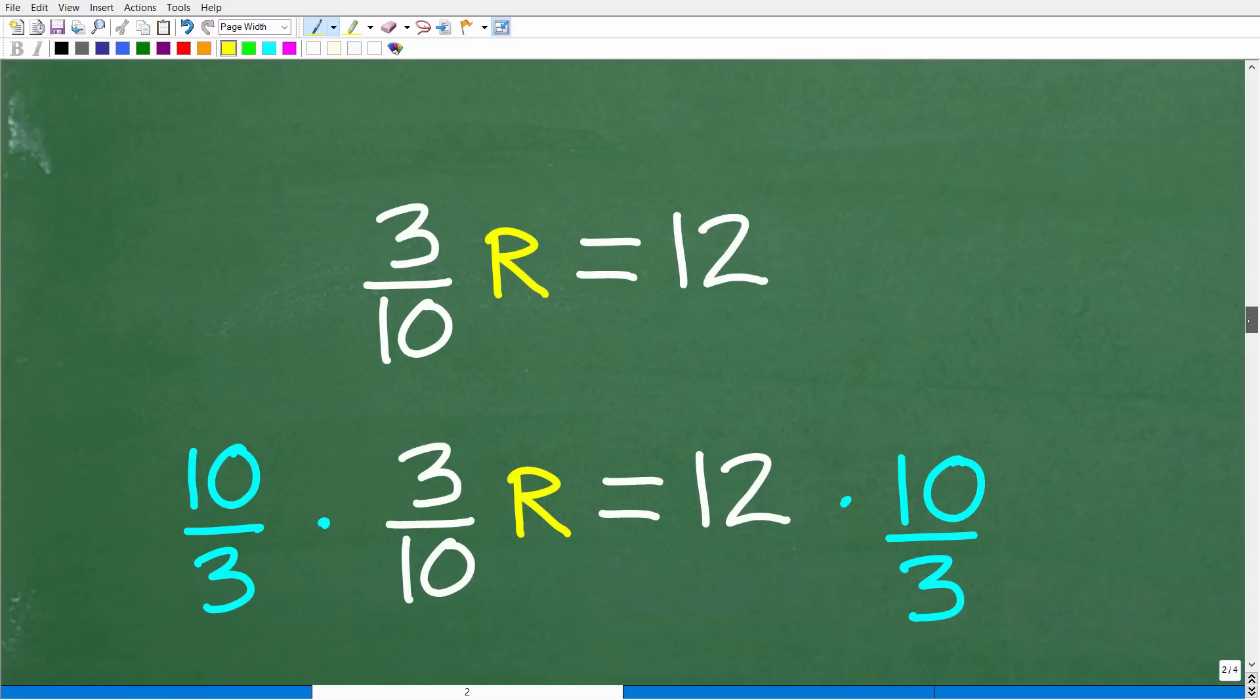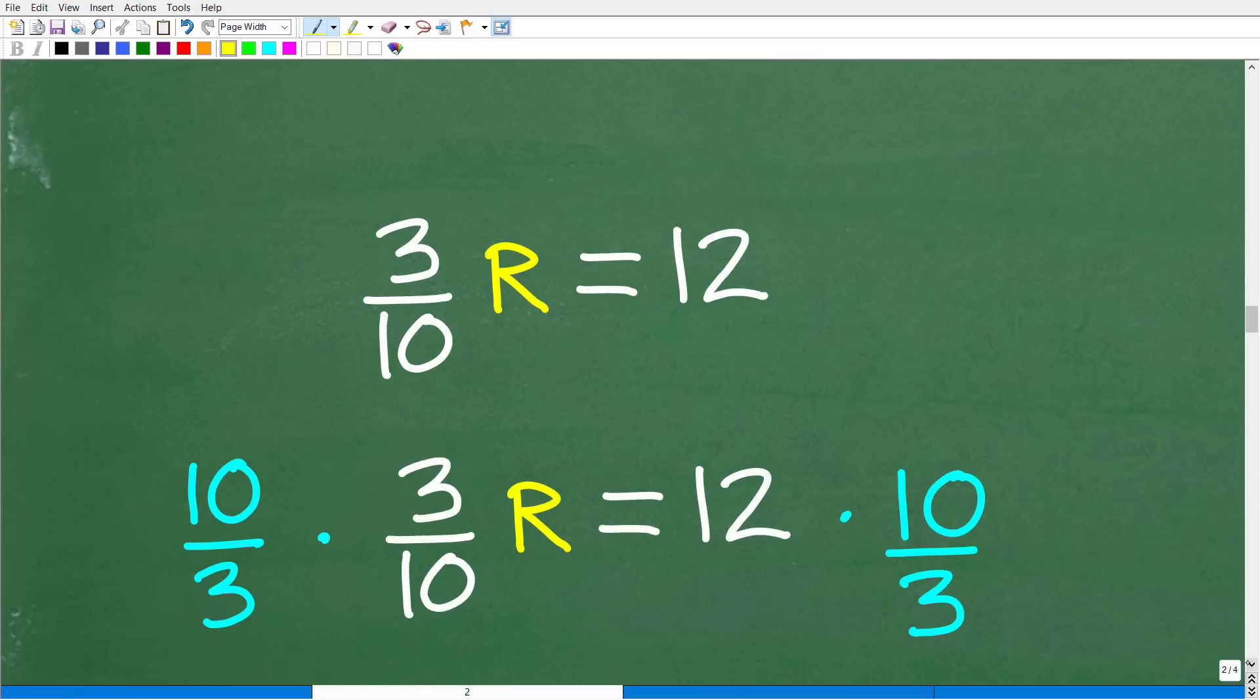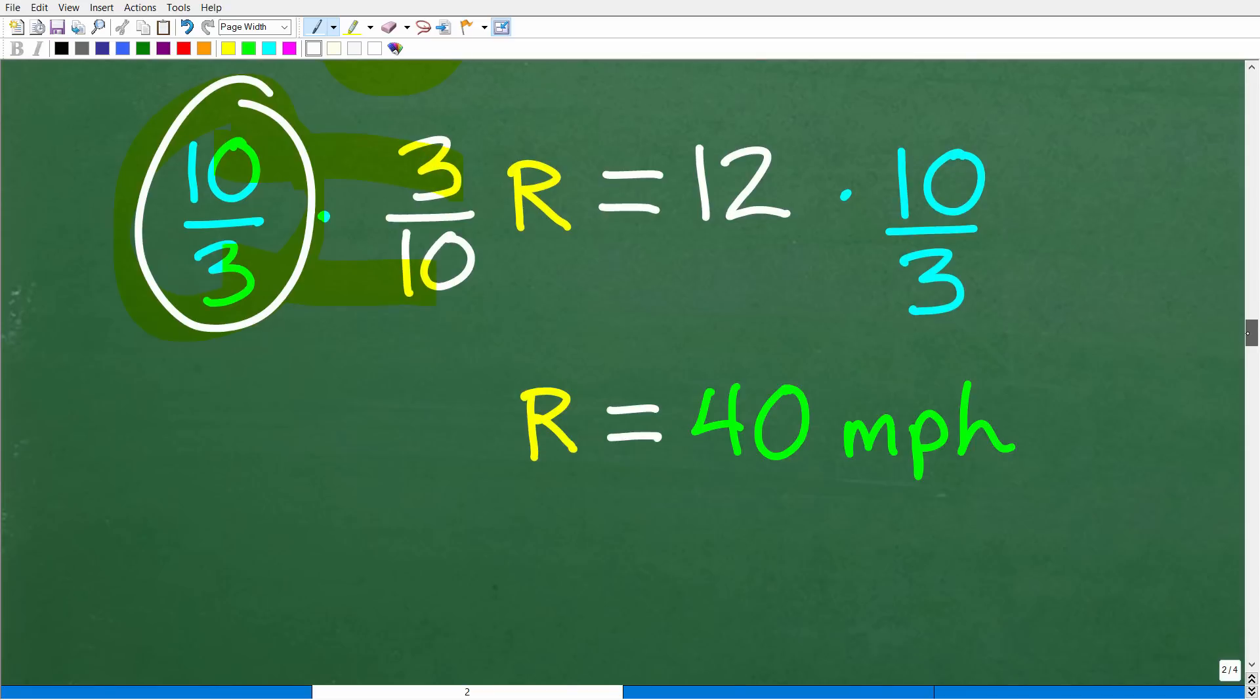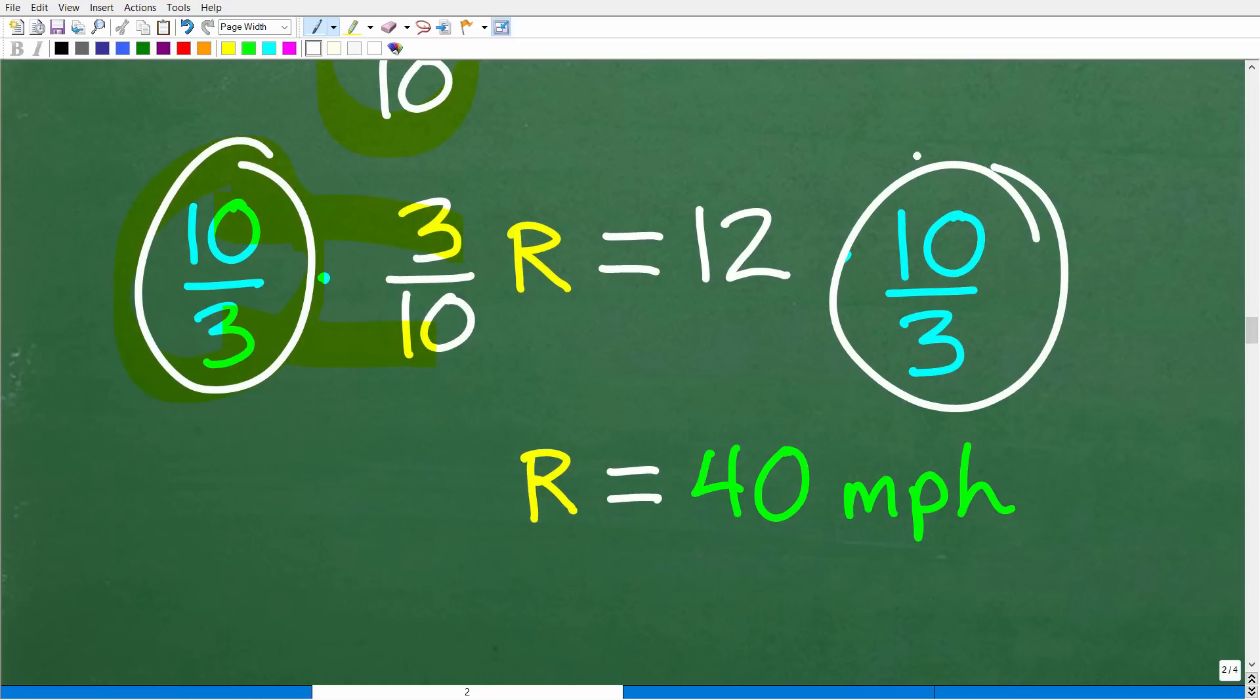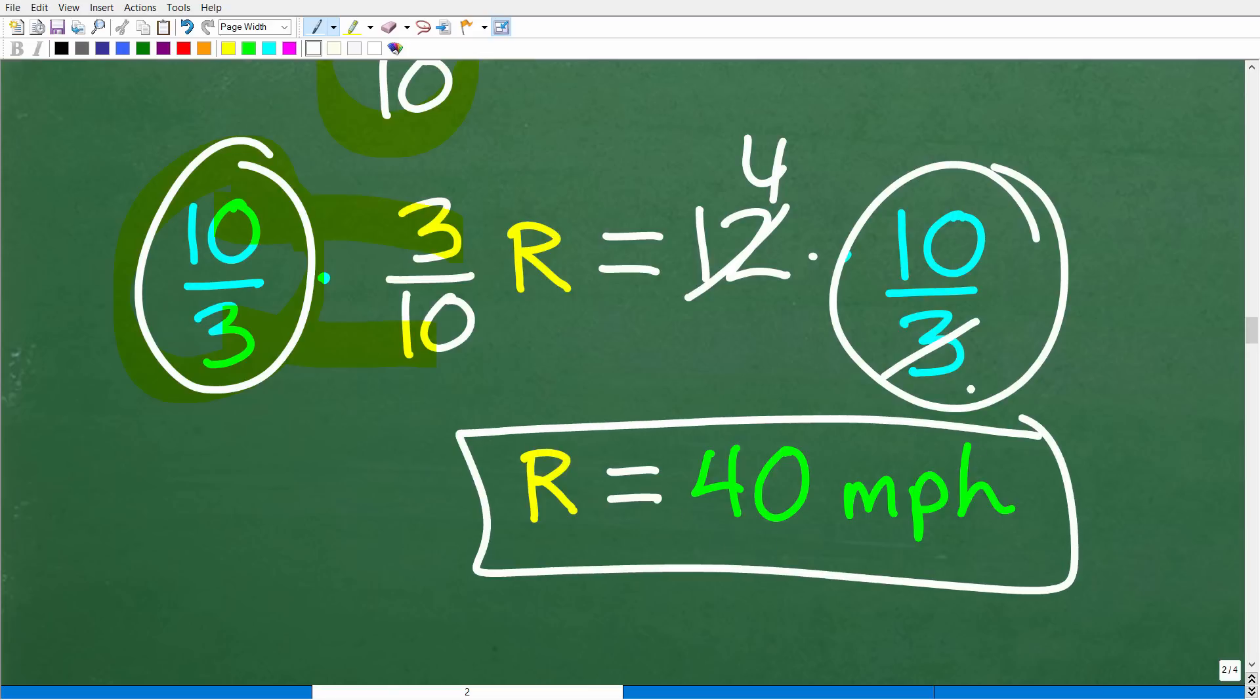All right, so let's go ahead and finish this up. We have 3 tenths r is equal to 12. So to solve for r, all we need to do is multiply both sides of the equation by the reciprocal. Okay, so this is the easiest way to solve basic fraction equations. So if the coefficient is a fraction, the best way to solve these type of equations, again, is to flip this upside down. That's called the reciprocal. So we have 10 thirds times 3 tenths. So when we multiply these fractions, 10 times 3 is 30. Over 3 times 10 is 30. 30 over 30 is 1. All right, so 1 or 1 r or r. But if we multiply this side of the equation by 10 thirds, remember the basic rule in algebra is you have to multiply the other side as well. Whatever you do to one side of an equation, you have to do to the other. So we have 12 times 10 over 3. So 10 over 3 times 12. 3 goes into 12, 4. 4 times 10 is 40. So our rate is 40 miles per hour.